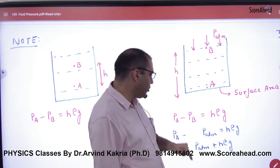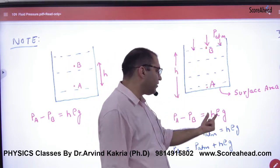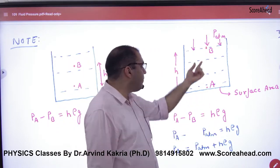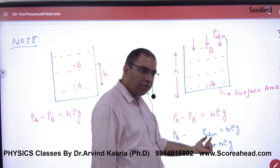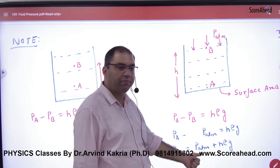And A point is below, so A point pressure will be more than B point pressure by a difference of H-ρg. So B point pressure is P atmospheric. When it goes on the right side, what will be A point pressure? P atmospheric plus H-ρg.